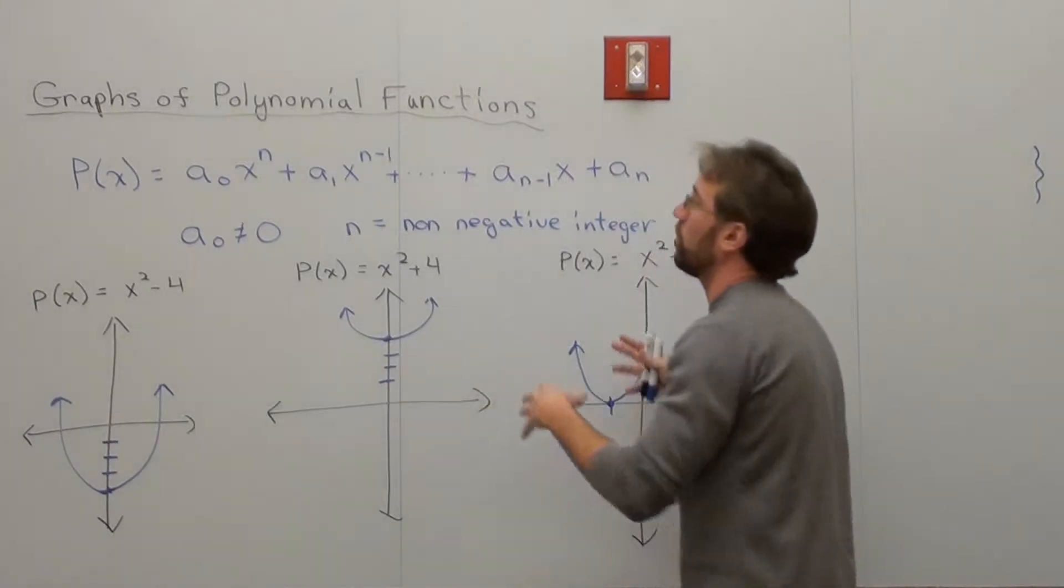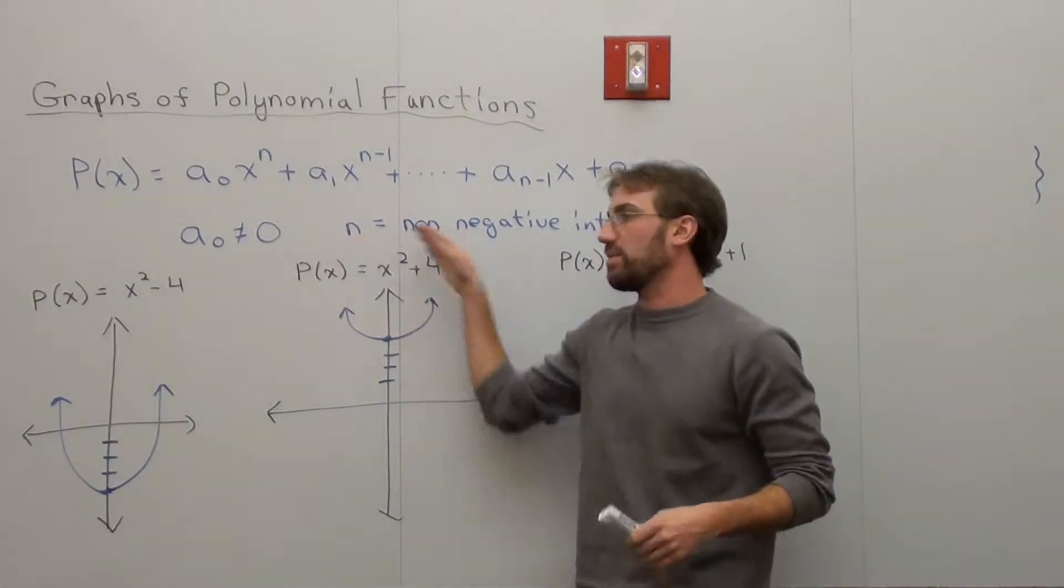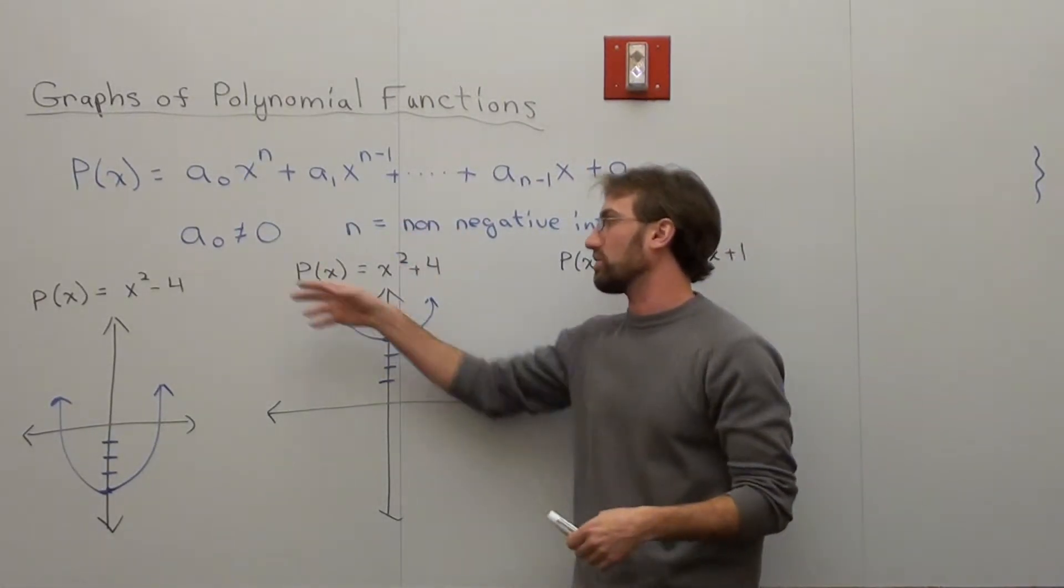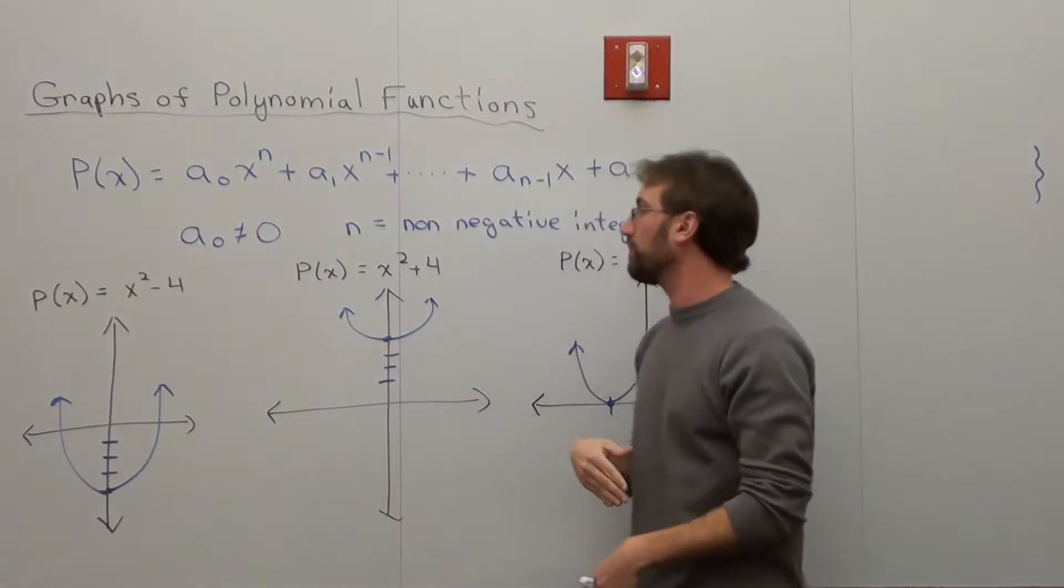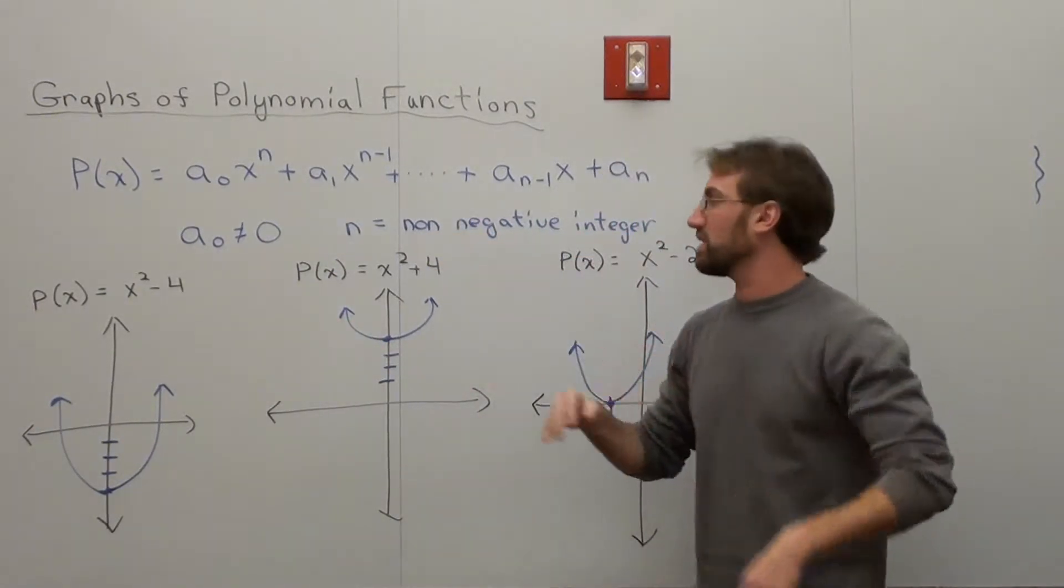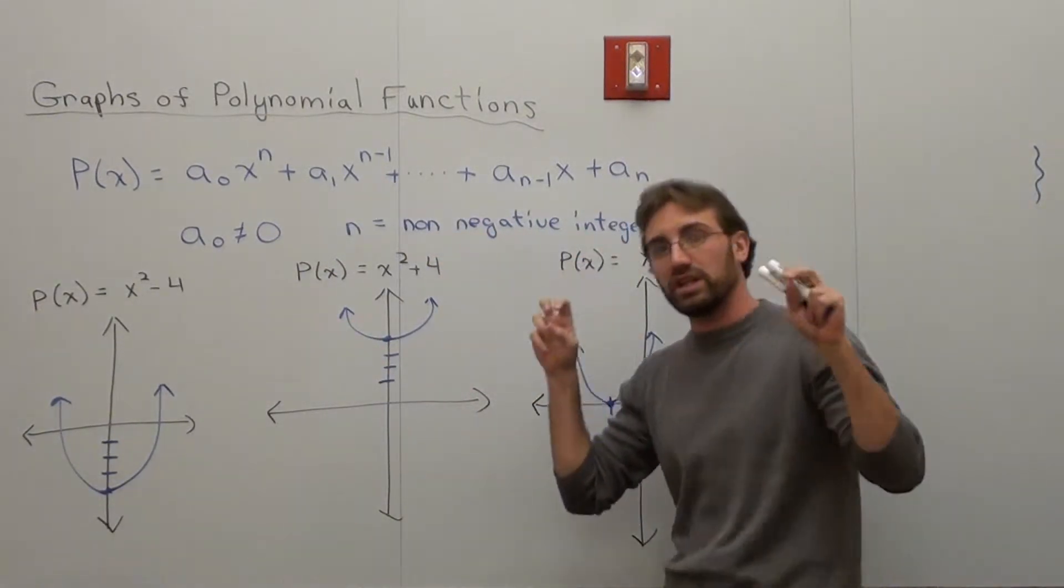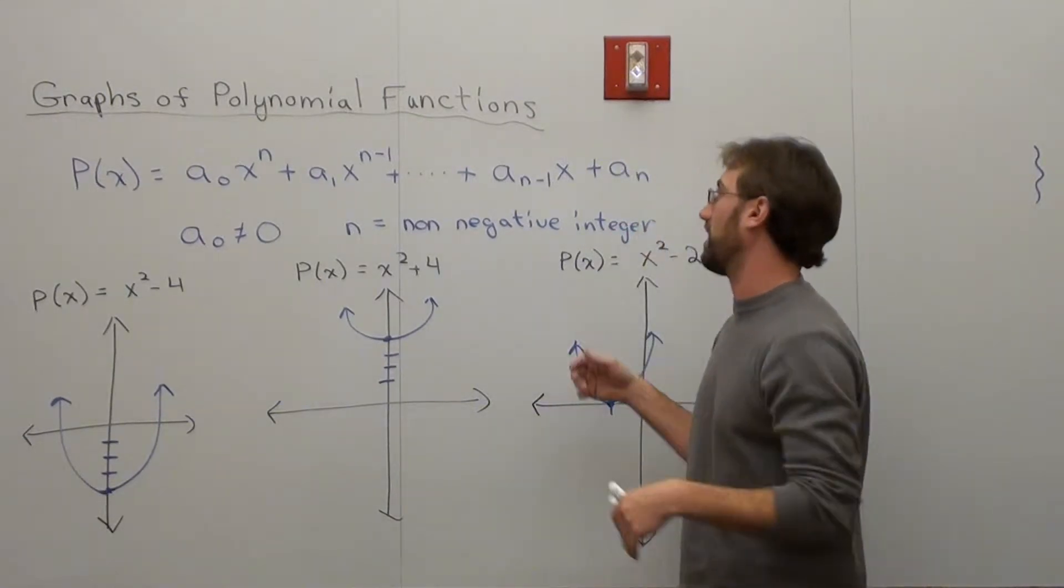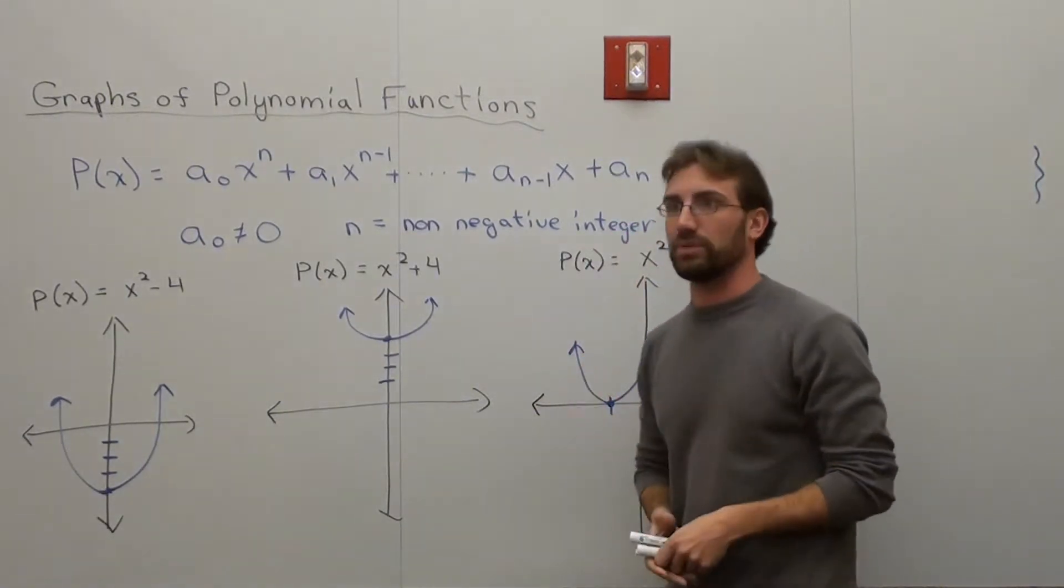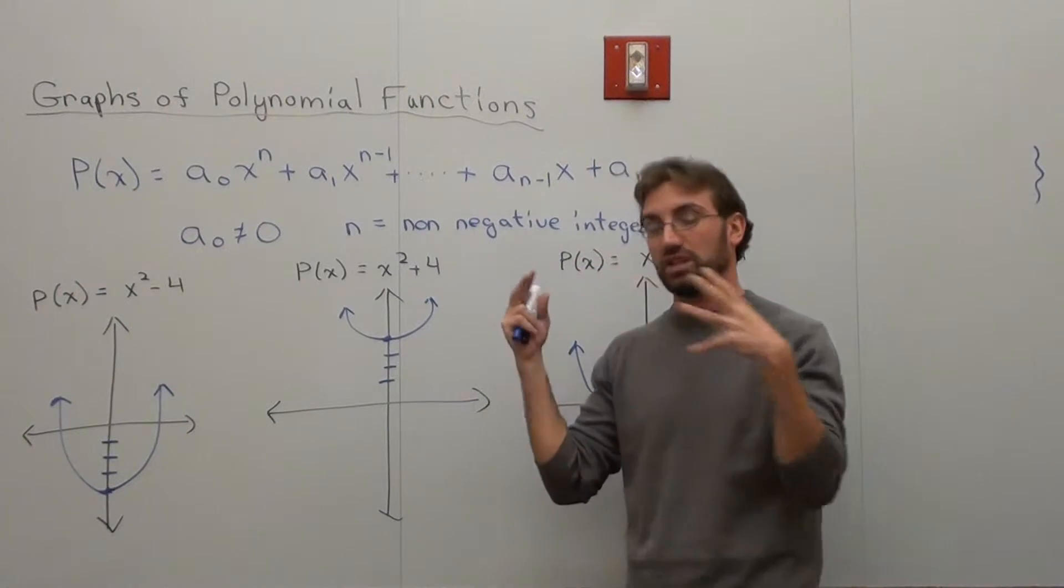Hello again, we're doing graphs of polynomial functions. Same formula, same conditions. The leading coefficient a₀ or a sub naught cannot equal zero, and your n, your degree on your leading coefficient—well, on all of them actually—must be a non-negative integer. So with that to consider, those are the conditions of a polynomial.